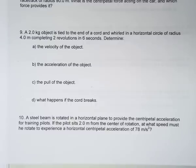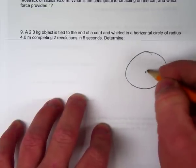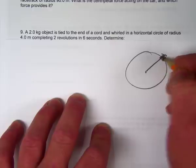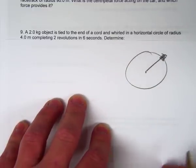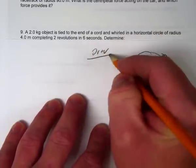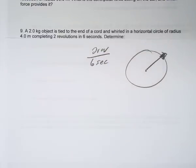As with all of these problems, just draw a little picture - it'll be way easier. We have a cord with an object on the end of the string going around. It says moving at two revolutions every six seconds - what are they talking about there? They're talking about frequency, because they're telling you the number of revolutions in a certain period of time.